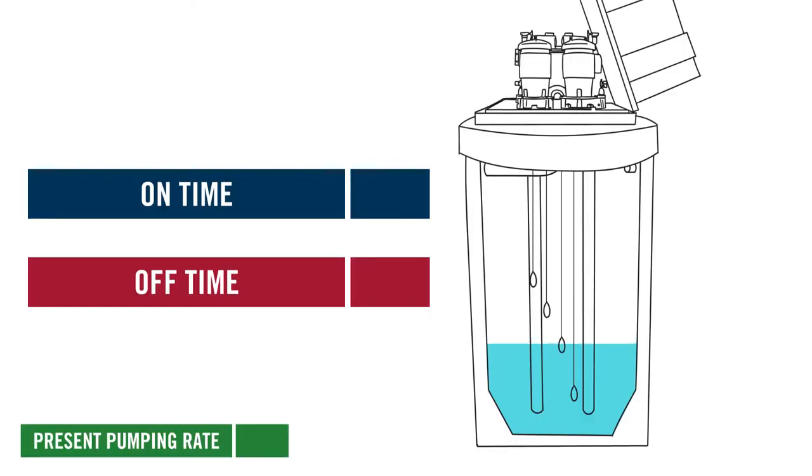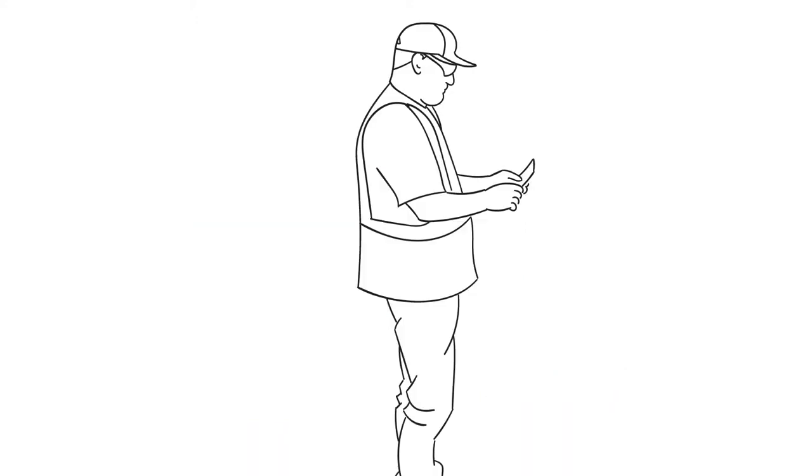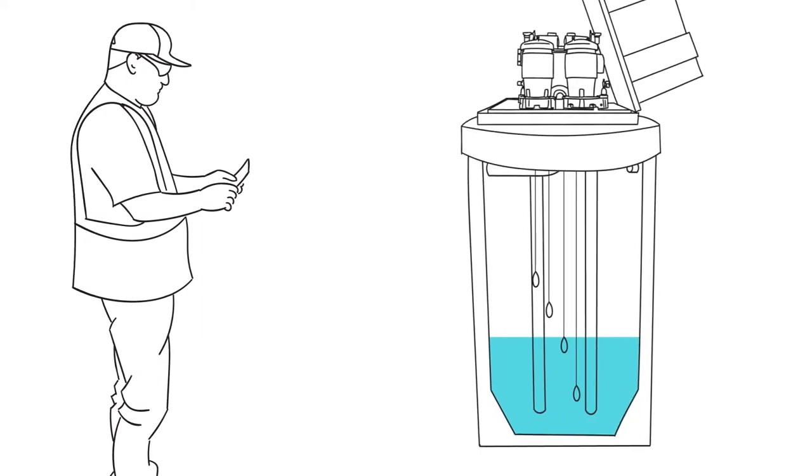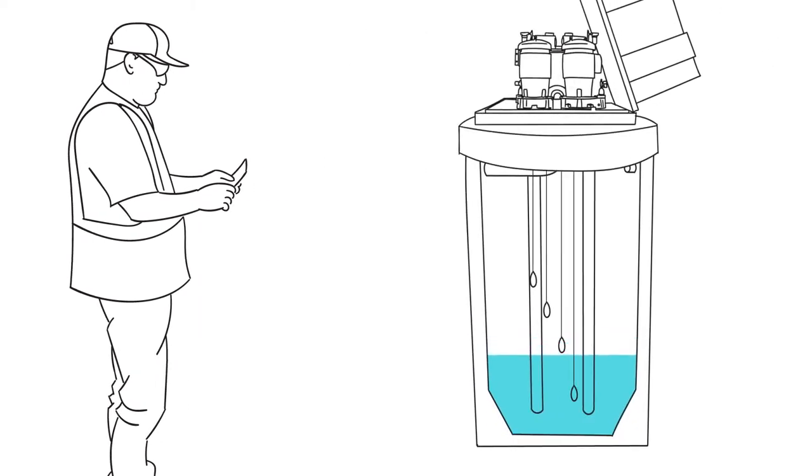Record the amount of time required for the pump station to pump down from the on-level to the off-level. Start your stopwatch when you hear the vacuum pump turn off and the wastewater pump turn on. Stop your stopwatch when you hear the wastewater pump turn off. This is the amount of on time.